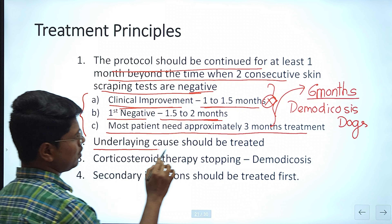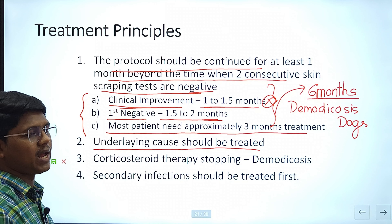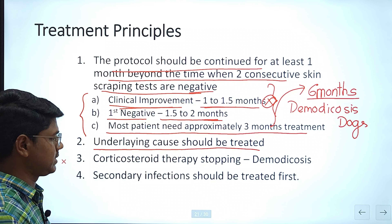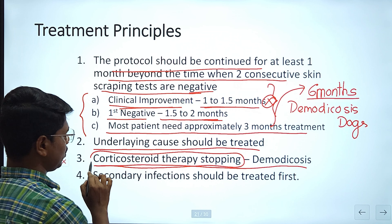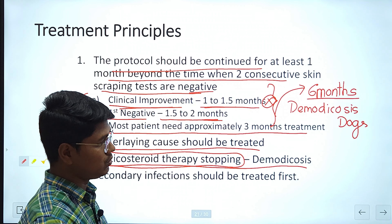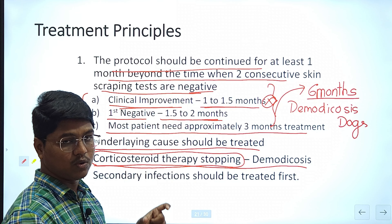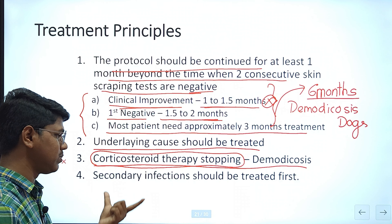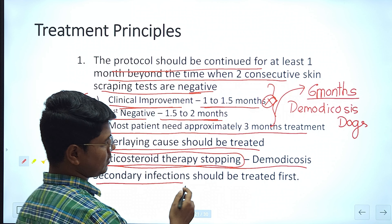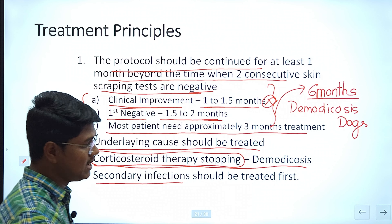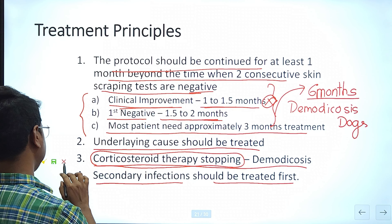The next principle: the underlying cause should be treated. If there is endocrinopathy like hypothyroidism or hyperadrenocorticism, treat it first. Corticosteroid therapy should be stopped — corticosteroids cause immunosuppression through which demodicosis can flare up, and demodicosis and hyperadrenocorticism can coexist. If there is secondary infection with signs like fever and anorexia, treat those first, then go for the demodicosis or scabies treatment.